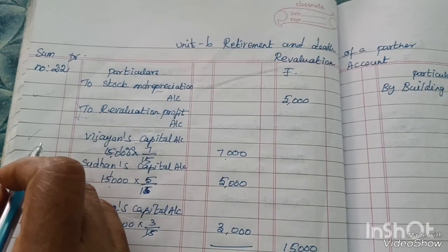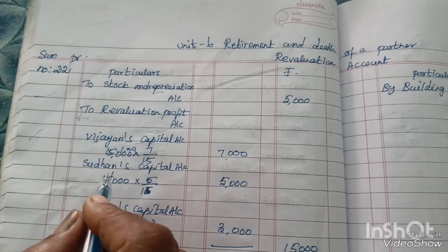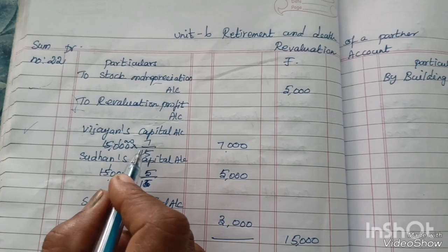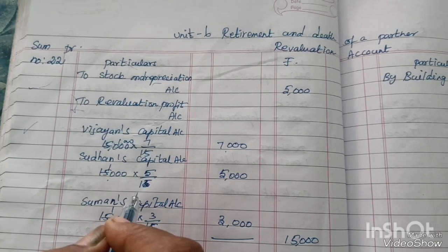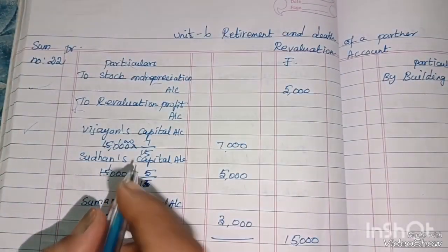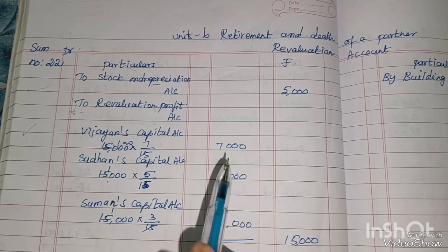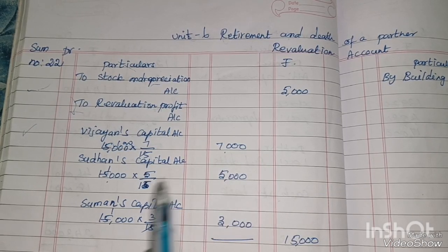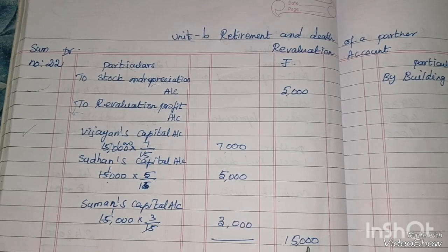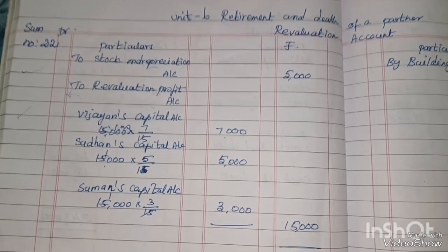Revaluation profit of 15,000 is shared among 3 partners. The capital ratio is 70,000 to 50,000 to 30,000, which gives a ratio of 7:5:3. So Vijayan gets 7,000, Sudhan gets 5,000, and Suman gets 3,000. Total is 15,000. Adding back the 5,000, total revaluation account is 20,000.